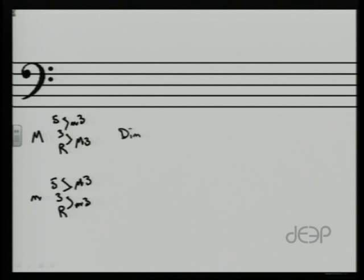A diminished triad is going to be one that has three notes, a root, a third and a fifth. And I wonder if anybody can guess, minor third on the bottom and minor third on the top. If that's what you guessed, you're absolutely right.